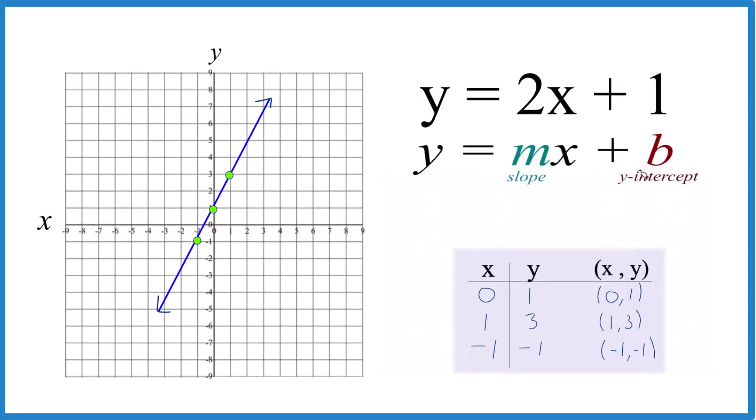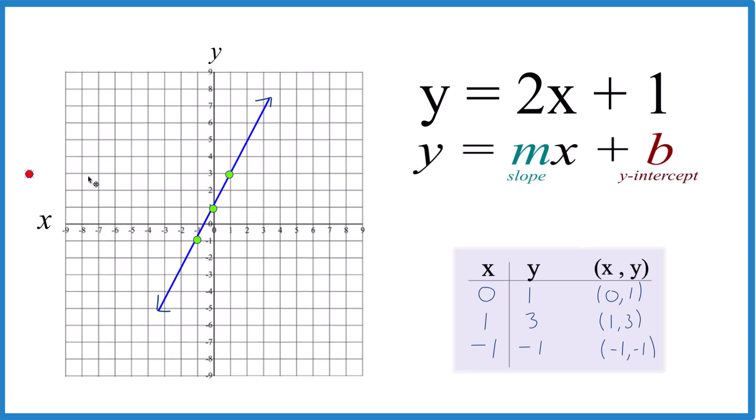So y equals mx plus b, and b is the y-intercept. So 1 is where we're going to intercept the y-axis. That's right here. So that's our first point.